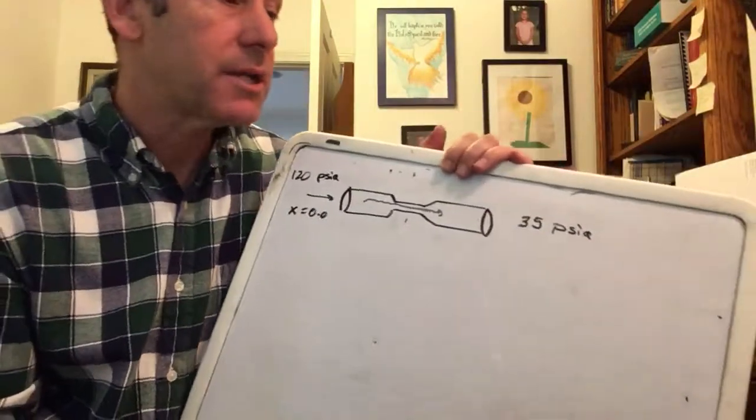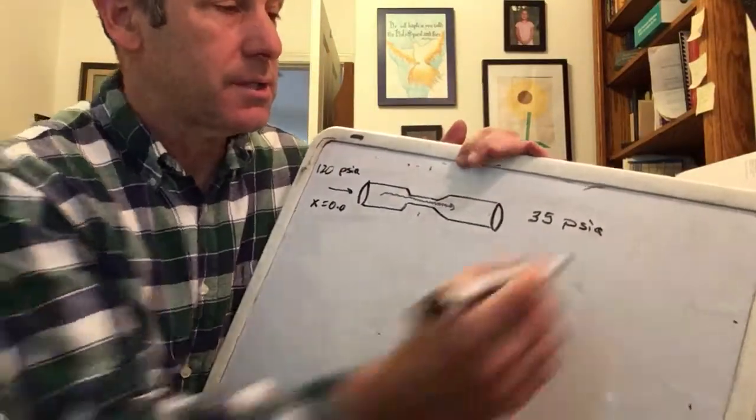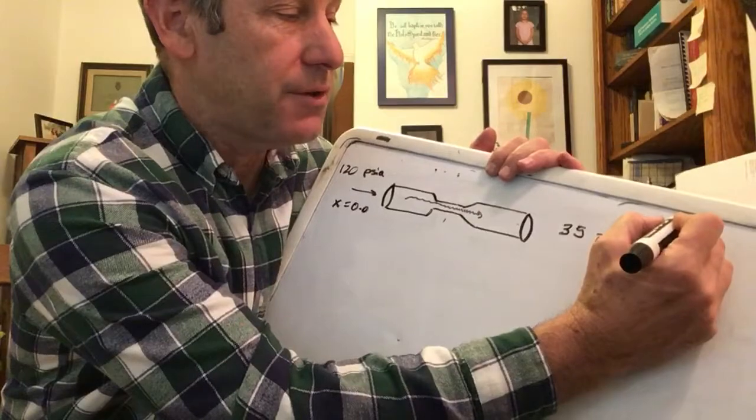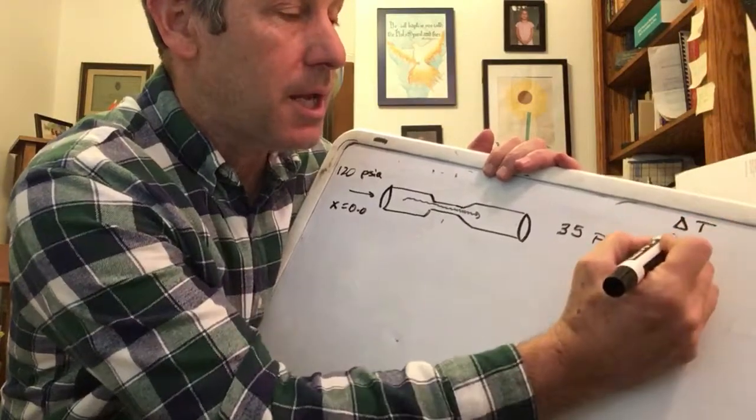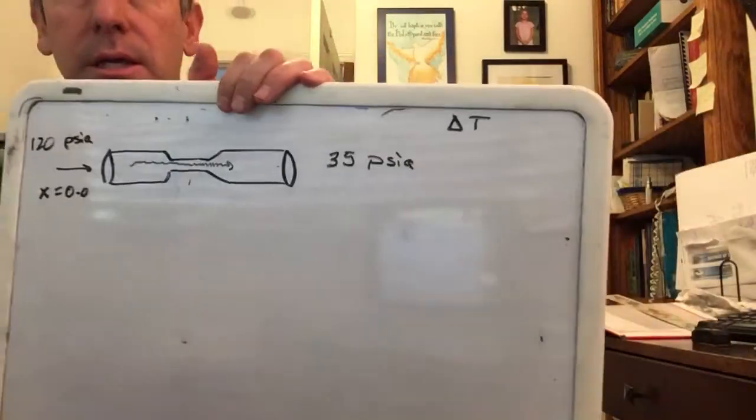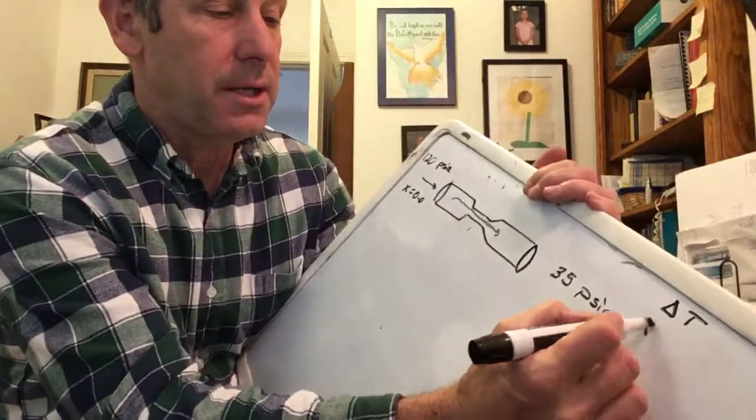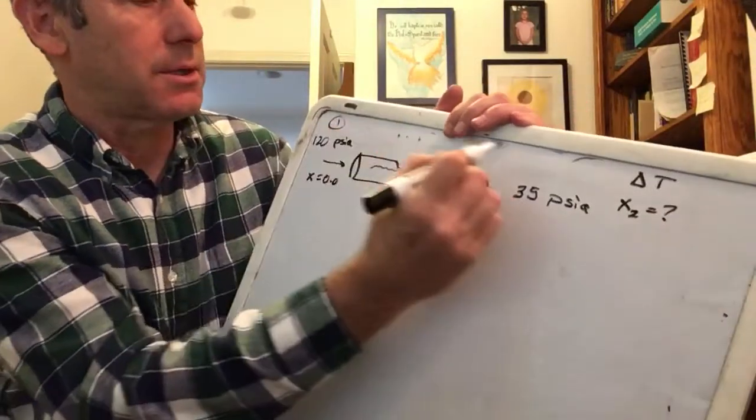What I want you guys to work on is two things. I want us to get the refrigerant delta T as it goes through there, and I would like us to get in addition the quality at the outlet. I'm going to call this one and I'm going to call this two.